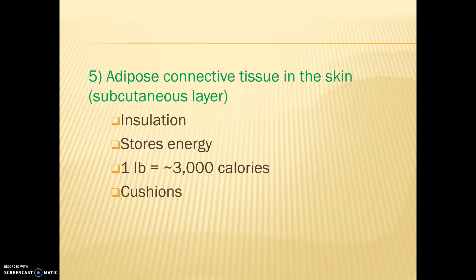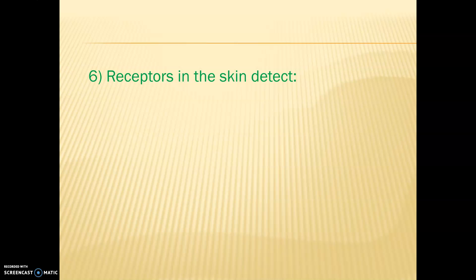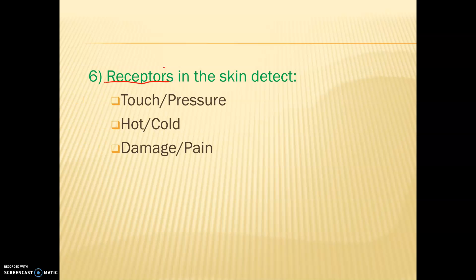About one pound of fat is approximately three thousand calories. Important roles here are insulation, energy storage, and cushioning. There are also receptors in our skin that help us read the world around us. Different types of receptors include touch or pressure receptors, hot and cold receptors, and damage and pain receptors.